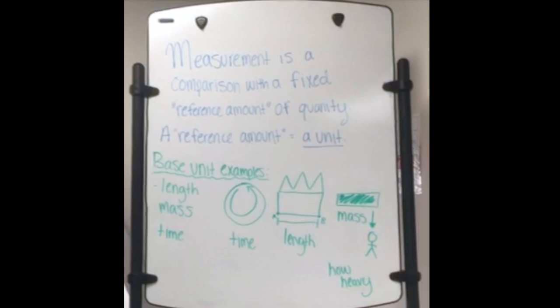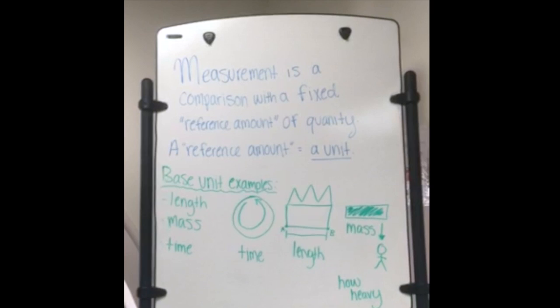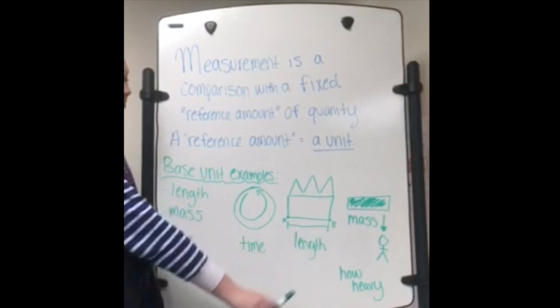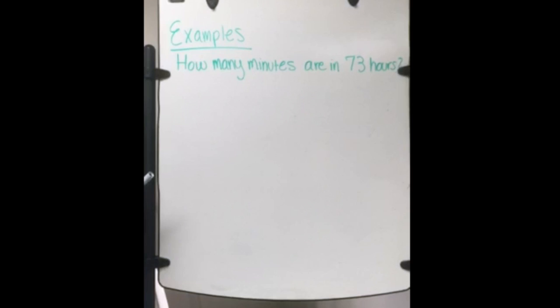This is a comparison with a fixed reference amount of quantity. A reference amount is a unit. Some examples of units are length, mass, and time. For example, the time it takes to go around an entire circle, or the length between A and B, or the mass of an object and how heavy it is if it fell on someone's head.